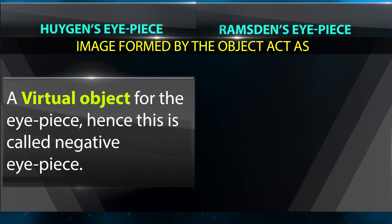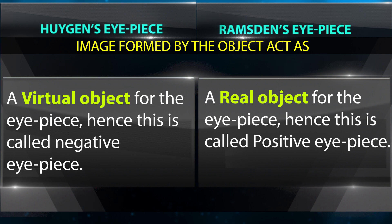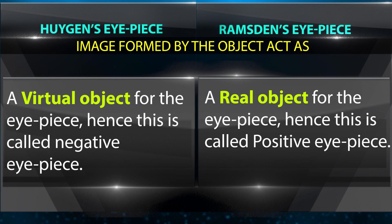In the Huygens eyepiece, the image acts as a virtual object for the eyepiece; hence this is called a negative eyepiece. In the Ramsden eyepiece, the image acts as a real object for the eyepiece; hence this is called a positive eyepiece.